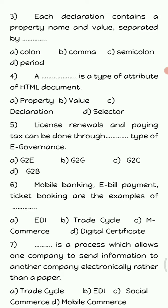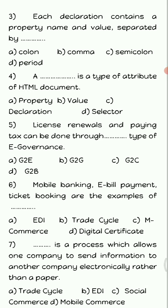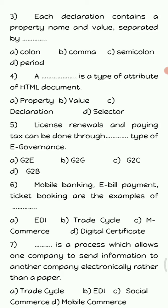A dash is a type of attribute of an HTML document — the answer is 'property'. License renewals and paying tax can be done through dash type of governance — the answer is G2C. Mobile banking, e-bill payment, and ticket booking are examples of dash — the answer is m-commerce, as all these things are done with the help of mobile. Dash is a process which allows one company to send information to another company electronically rather than on paper — this is EDI, that is electronic data interchange.